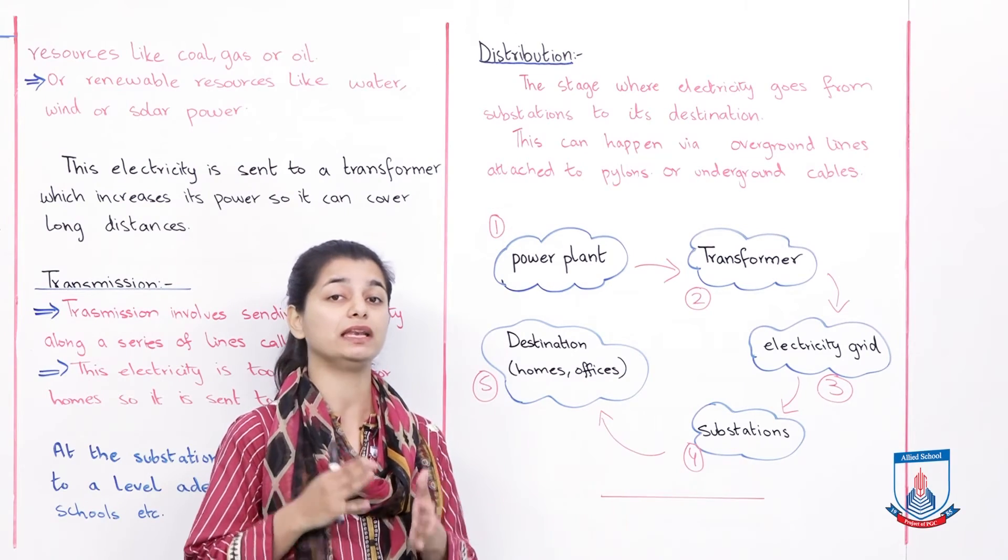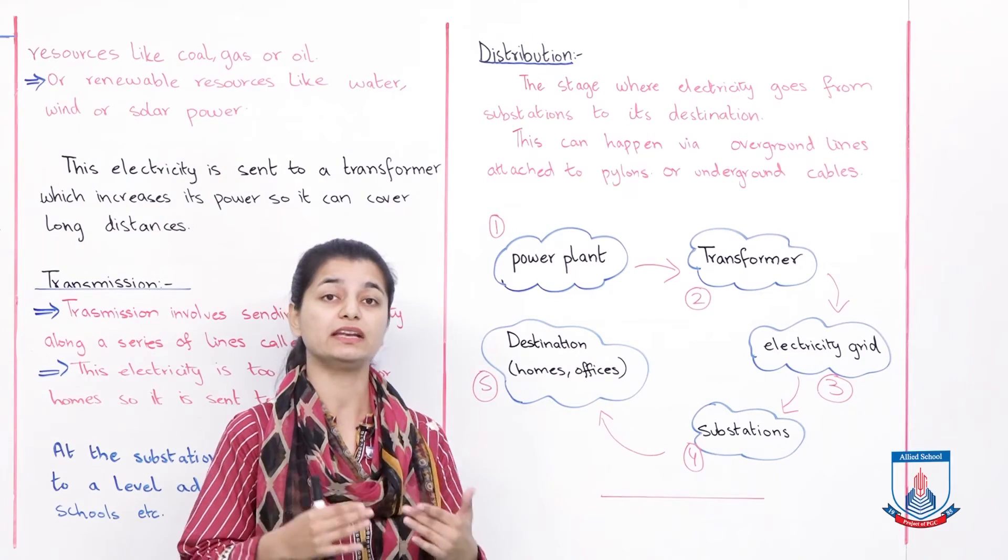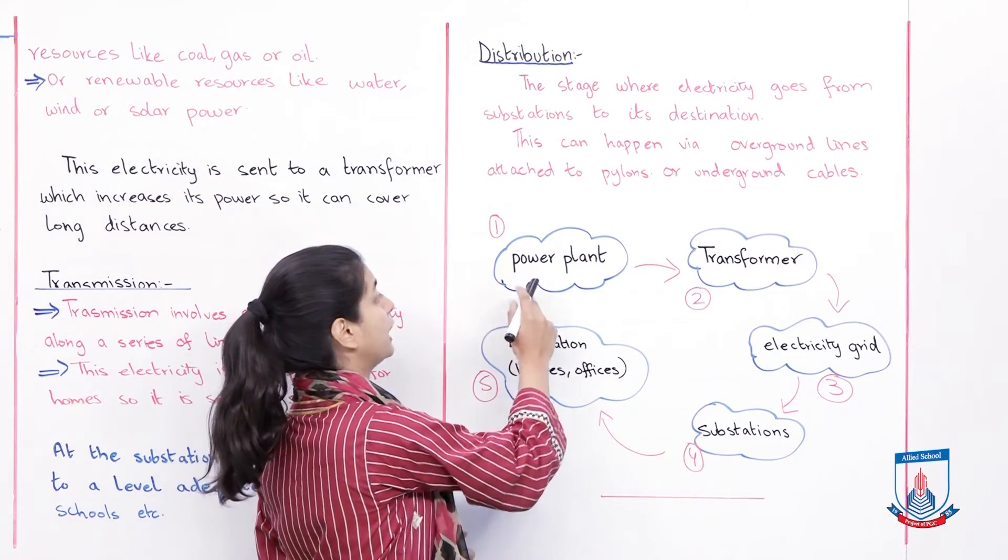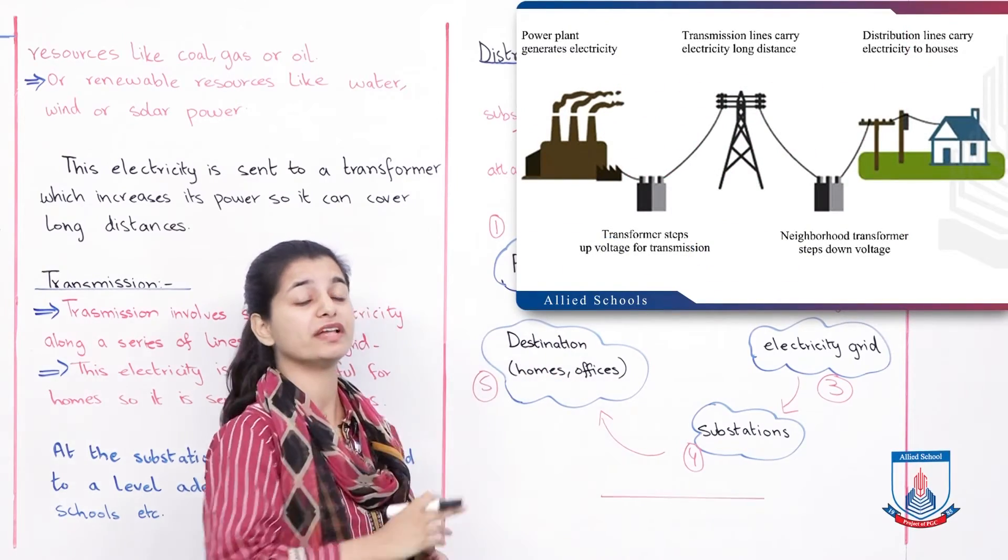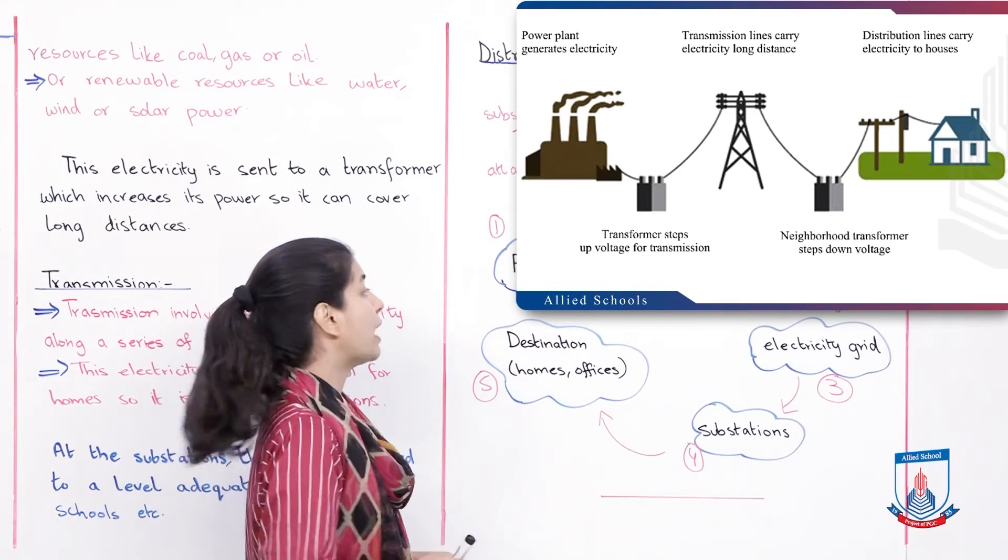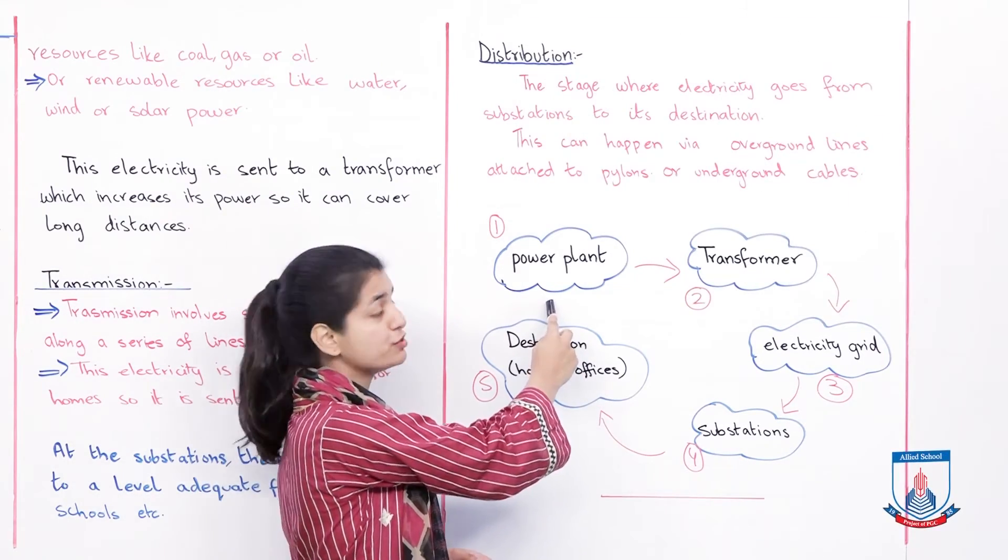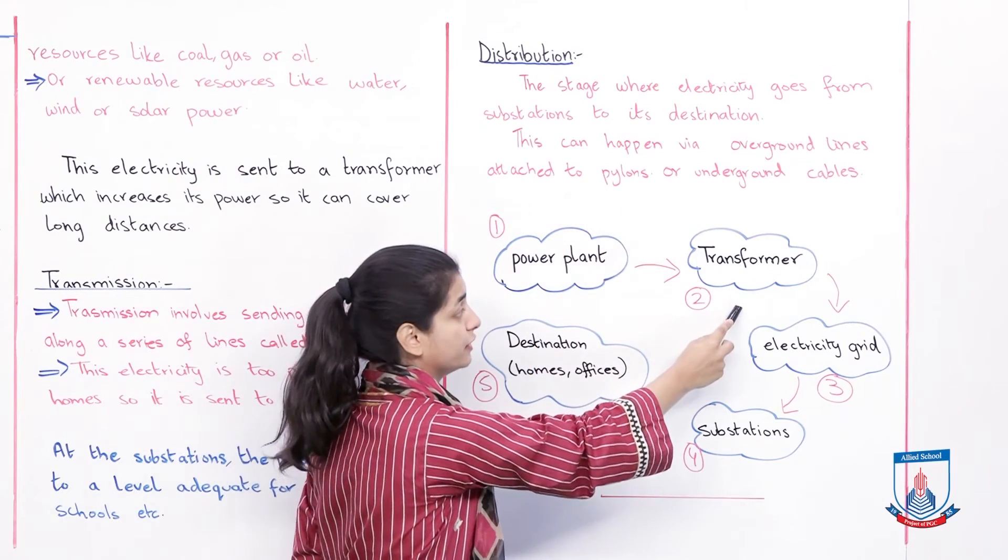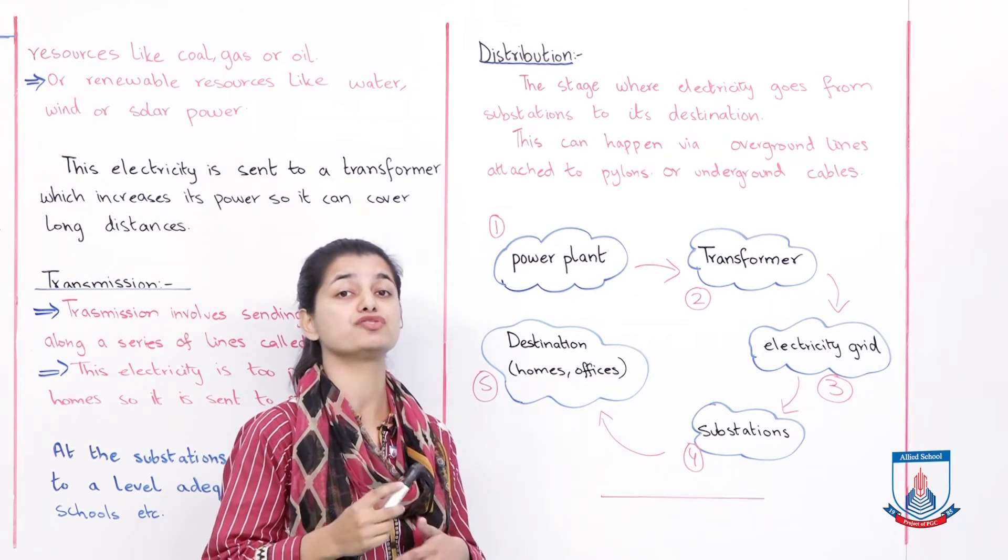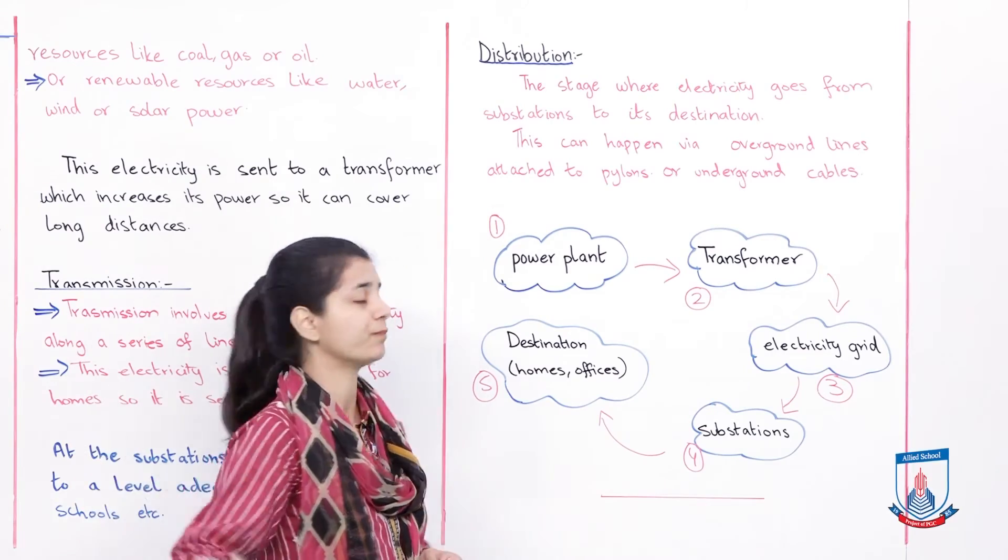Now I will summarize this whole process for you so you can see exactly which steps are involved in making electricity and it reaching your houses. First, the power plant where electricity is generated. You can see a picture of what a power plant looks like. From the power plant, it goes to a transformer where its power is made very strong so it can travel long distances.